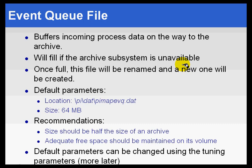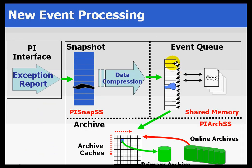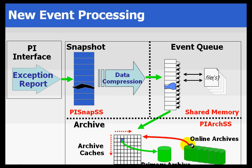Occasionally there are certain things that can interrupt this flow. For example, if the Archive process itself fails for whatever reason, we are going to have a problem storing data, so we want to queue it somewhere. Also, if there is a huge surge in the amount of process data overwhelming the system, the Event Queue can handle that overload. And if the CPU is overloading due to a lot of activity on the server, the Event Queue can handle this much faster than the physical writing to disk that happens with the Archive cache.